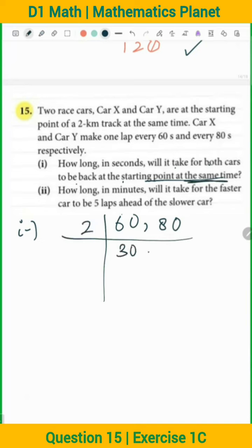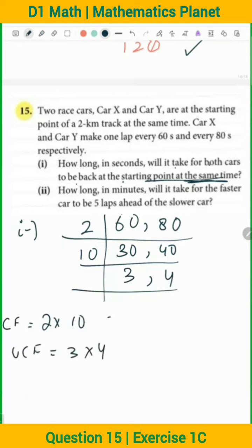So, 2 times 60 is 60, 2 times 80 is 80. Then 10 times 3 is 30, 10 times 4 is 40. So common factors are 2 times 10, and common factors are 3 times 4. 10 times 2 is 20, and 3 times 4 is 12. And we have the LCM.